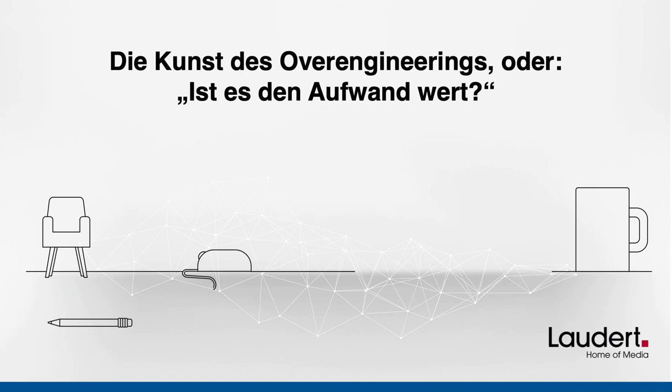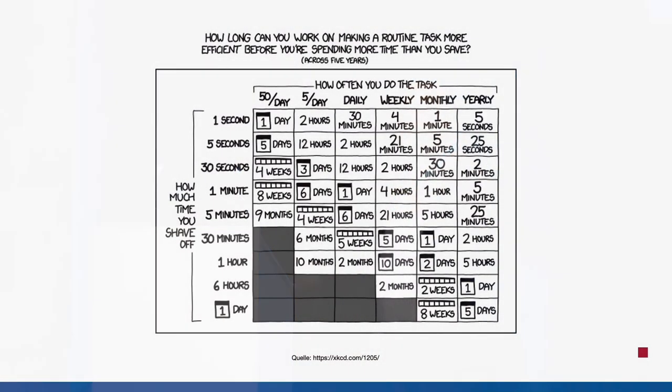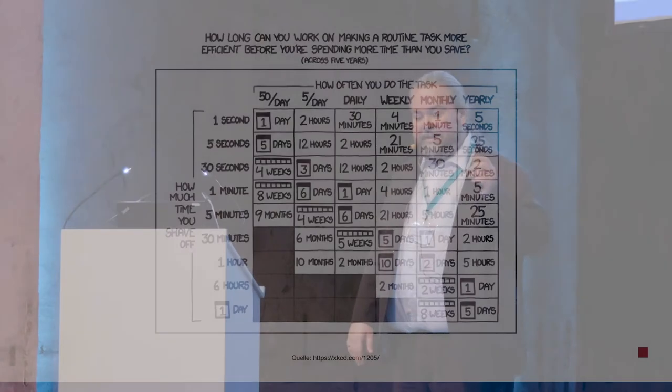If you speak about process optimization — who has seen this chart before? This chart shows something really important: it shows how much time I can spend optimizing a task over a period of five years until I spend more time than I save. The thing I do 50 times a day — spending 30 minutes optimizing — the day isn't long enough for that. If there are things I do once a week and I save 30 seconds — looking at five years, I should only spend about two hours on that optimization. And we're looking at all man-hours.